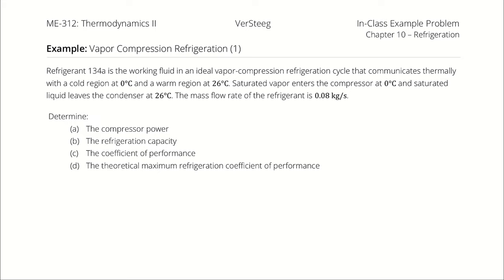Setting this up as a simple vapor compression refrigeration cycle, we want to determine the compressor power, the refrigeration capacity — referring to the amount of heat absorbed from the cooling side — the coefficient of performance (noting that we have different COPs depending on whether we are analyzing a heating or cooling process), and the theoretical maximum refrigeration COP that could occur if everything were perfect.